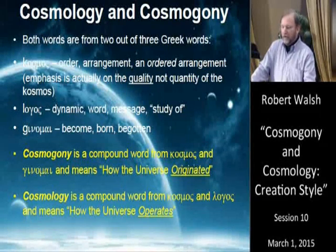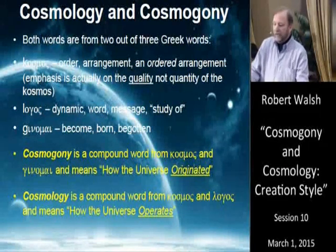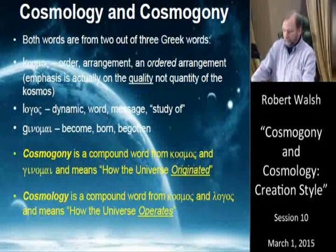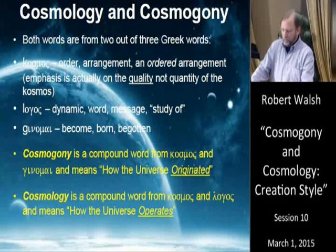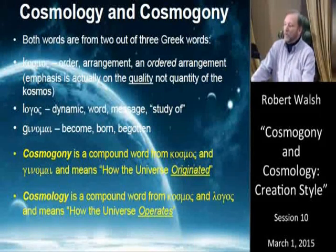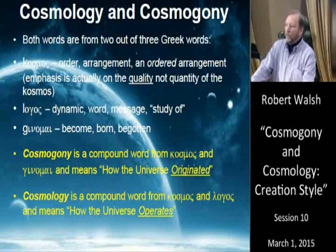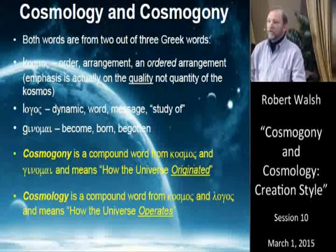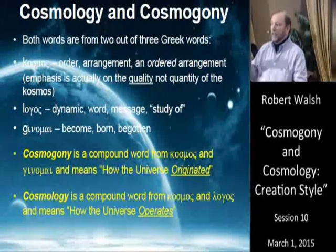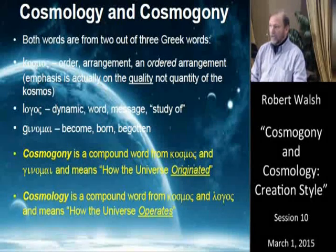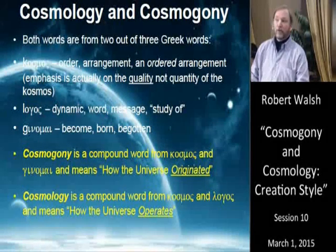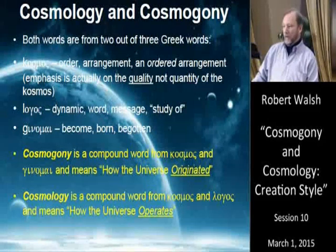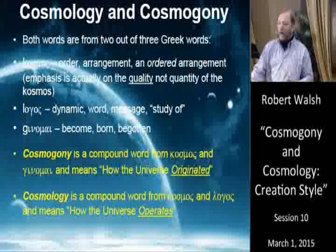The third word is ginomai, which means to become, to be born, or to begin. If you take cosmos and ginomai and put them together, you get cosmogony — how the universe originated. So cosmogony is the word we want to use when talking about the origin of the universe, while cosmology is the word we use when talking about how the universe operates. Not understanding that distinction has caused a lot of problems.